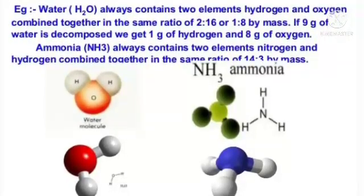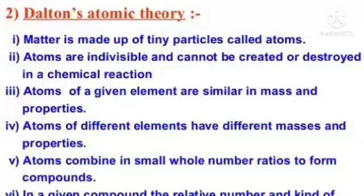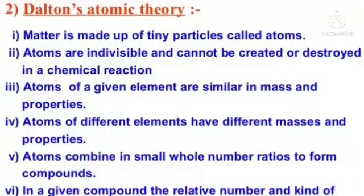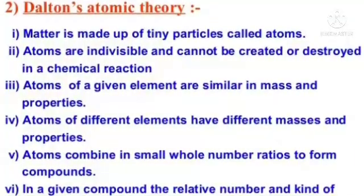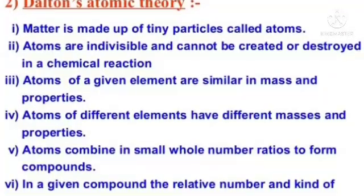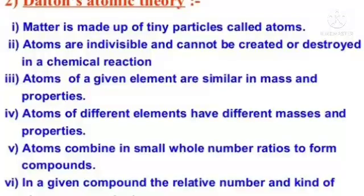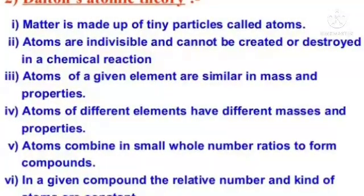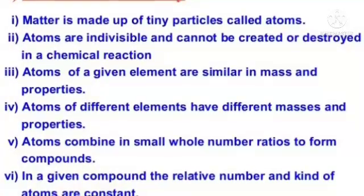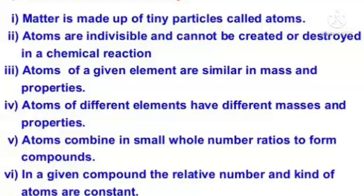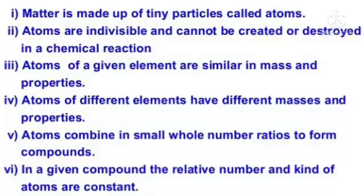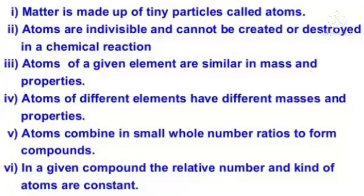Dalton's atomic theory: Matter is made up of tiny particles called atoms. Atoms are indivisible and cannot be created or destroyed in a chemical reaction. Atoms of a given element are similar in mass and properties. Atoms of different elements have different masses and properties. Atoms combine in small whole number ratios to form compounds. In a given compound, the relative number and kind of atoms are constant.